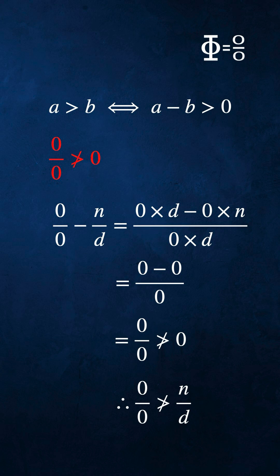It's a theorem of transreal arithmetic that 0 over 0 is not greater than 0. This follows from tetrachotomy.